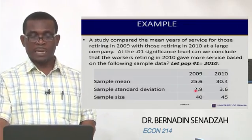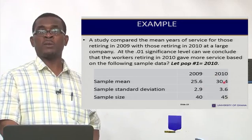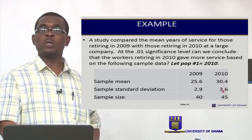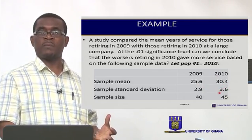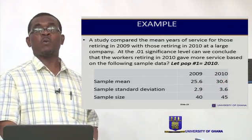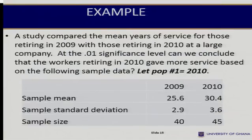Now, looking at the data, the mean for 2010 is indeed greater. But you do not just conclude on the basis of that alone — the 30.4 could have been due to sampling variation. That's why we needed to go through the procedure, and their decision was upheld.